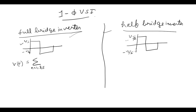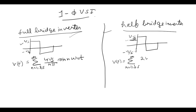And since for the half bridge the maximum value is reduced by 2, V(t) equals summation for n equal to 1, 3, 5 of 2Vs upon nπ sin(nω₀t).